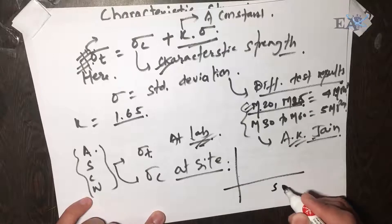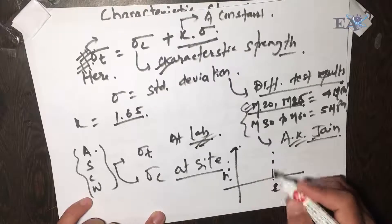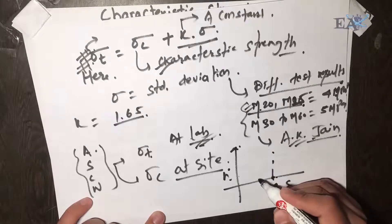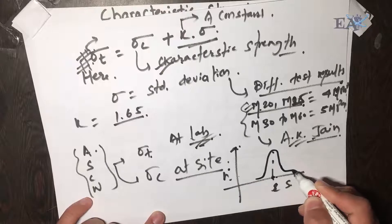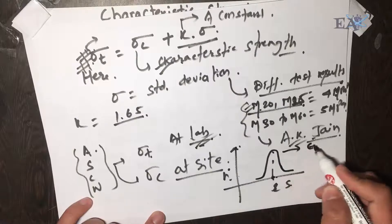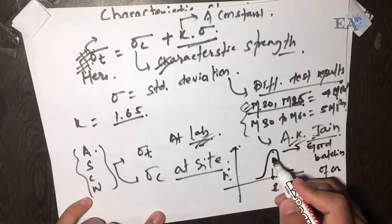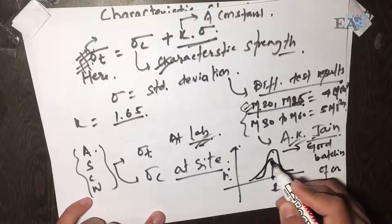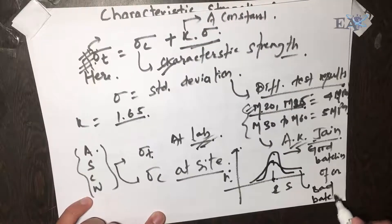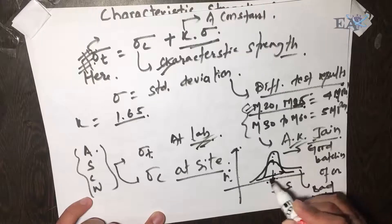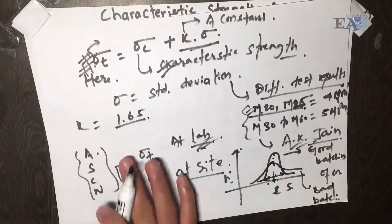Looking at the bell curve again — with compressive strength on the x-axis and frequency on the y-axis — if your curve is narrow and slim, that indicates good concrete and good batching. If your curve is wide and fat, that indicates bad concrete, meaning there is high variation from the mean. The variation from the mean must be as low as possible for the batching to be considered good.